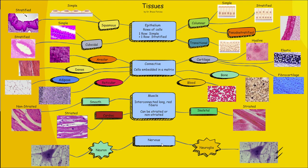Lastly, we have nervous tissue. This one is pretty easy to identify — it only consists of two things: neurons, which are the cells of the nervous system with a large cell body, and supportive cells called glial cells or neuroglia. Glial cells are the little cells that support the neurons; they do not conduct electrical impulses. The neurons are the ones that do all the work. Hopefully this helps you with tissues, and I'll post this infographic in the library space.